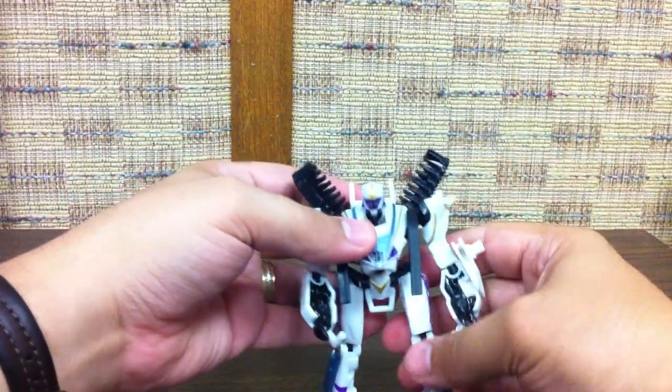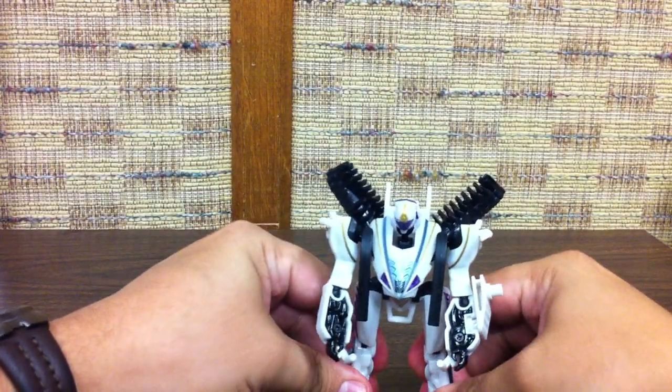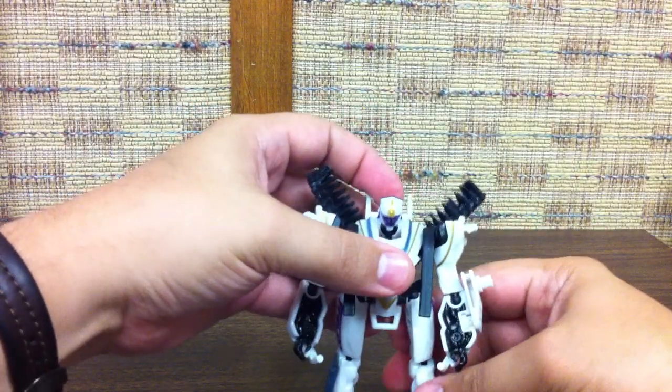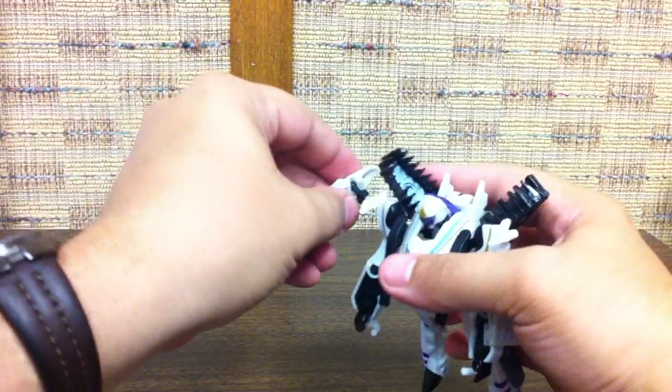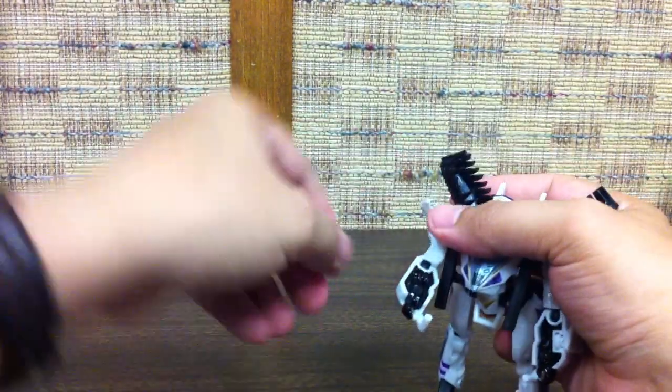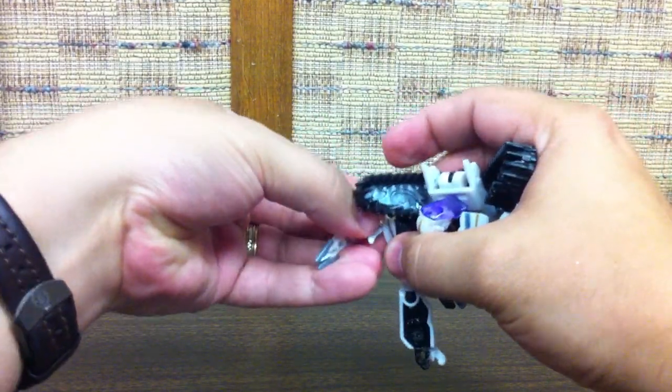So he's got some cool little shoulder designs there with the chainsaw. Then you can attach these up here to his shoulder clips. These would be the handlebars in vehicle mode, so you just clip these on up here.